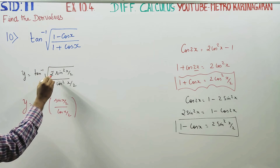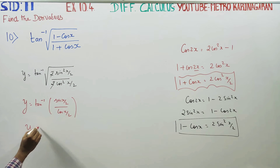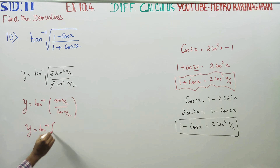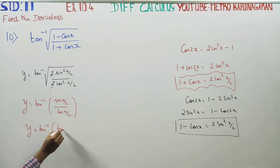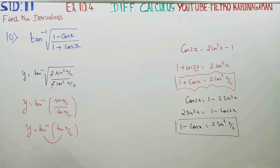It is 1 minus cos x over 1 plus cos x, which simplifies via trigonometric substitution. Since sin divided by cos equals tan, the expression becomes tan inverse of tan (x/2), and tan inverse and tan cancel each other out.